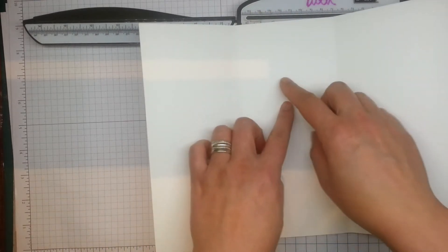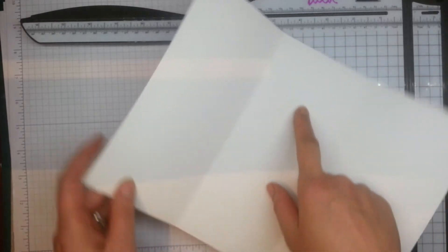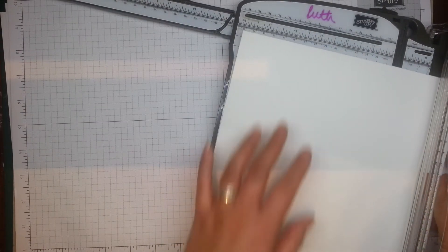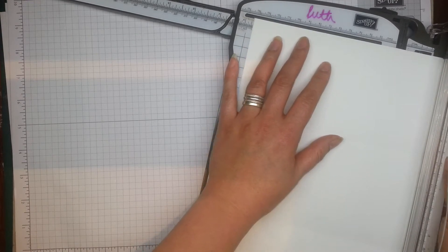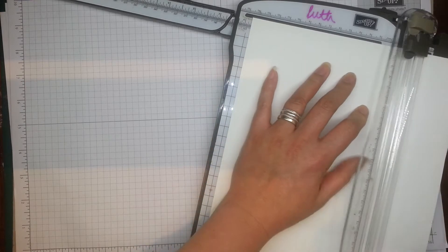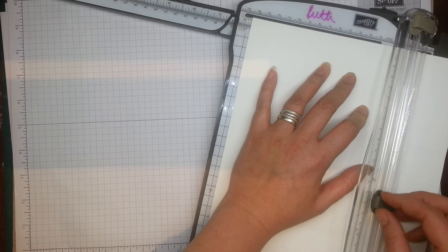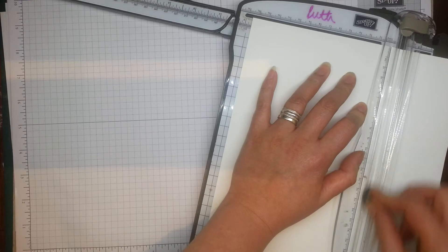But then I want to cut it from here. So, I'm going to score at 5 3⁄4 inches, which is about 14 and 6mm. So, I'm just going to cut it here.